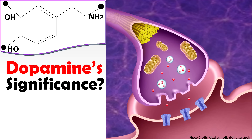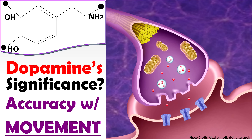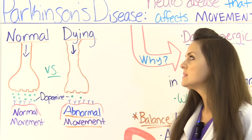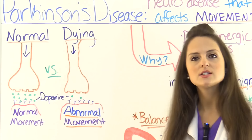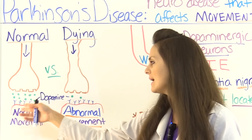Now what is the significance of this? Why is this an issue? Well, because dopamine provides us with accuracy with our movements. So if we are losing it and not having a lot of it, we're going to have problems. Over here we have a normal dopaminergic neuron — it's nice and healthy, so it's releasing the neurotransmitter dopamine and those receptors are gladly accepting that and we're getting normal movement.